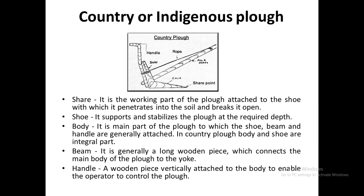The plow is the most commonly used primary tillage implement. The first type is the country or indigenous plow. This traditional plow has a body, a handle, a shoe, a share, and a beam. The share is the sharp part which penetrates into the soil. The handle is held by the person driving the animal. The rope is attached to the animal at the point of hitch for stability, and the beam is the component attached directly to the animal. Country or indigenous plows are mostly animal-drawn.